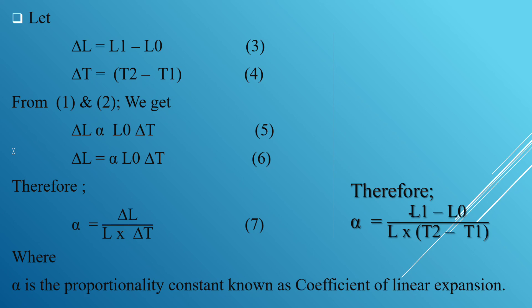Substituting delta L and delta T into the equation, alpha is written as alpha equals (L1 minus L0) divided by (L0 times (T2 minus T1)). This is the basic equation for finding the coefficient of linear expansion of any substance.